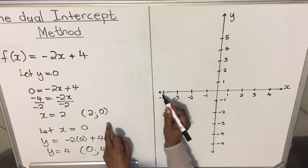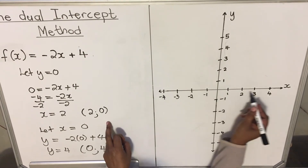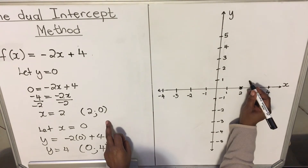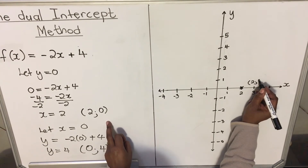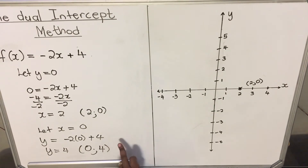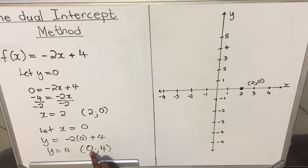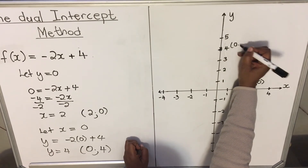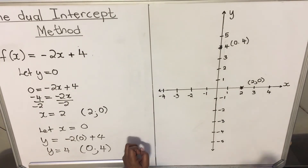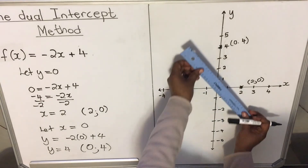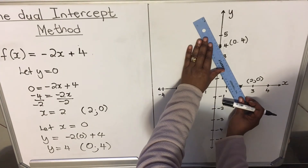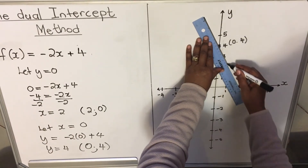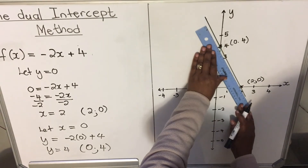Let's plot on our graph. The first coordinate is (2, 0). When y is zero it lies on the x-axis, so (2, 0) is plotted here. Our y-intercept is (0, 4), which is plotted here. Then we take a ruler and join the two intercepts — that is why it is called the dual intercept method: it uses two intercepts.